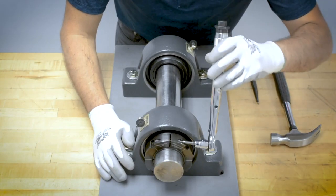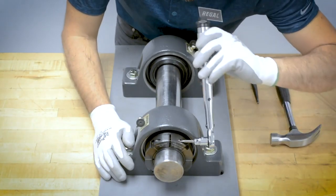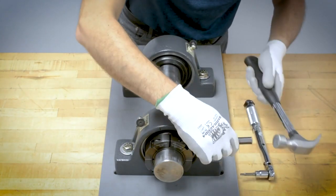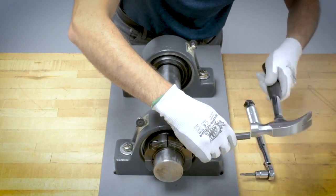For bearing removal, reverse the previous steps. When loosening the collar nut, it can be expected to alternate between drift and hammer and rotation by hand until the collar comes loose.